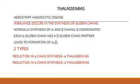Now let us look at the second type, known as thalassemia. This is a hereditary hemolytic disease. Here, an imbalance will occur in the synthesis of the globin genes. Normally, the synthesis of the alpha chain and the beta chains are coordinated. Each alpha globin chain will have a beta globin chain partner, leading to the formation of alpha 2 beta 2, which is the structure of normal hemoglobin.